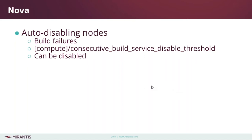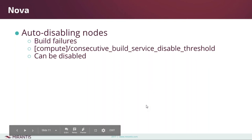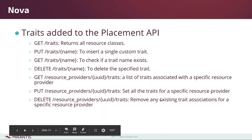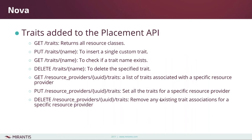Another new feature in Pike is the ability for nodes to automatically disable themselves if workloads are failing to build. You set the maximum number of consecutive failures you want to tolerate, and once the node reaches that point it sets itself as unschedulable so that an operator can look at the node and see what's going on. This way you don't continually send workloads to a node that can't accommodate them.